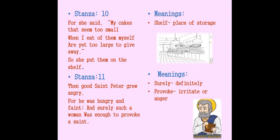Stanza 10: 'For she said, my cakes that seem too small when I eat of them myself are yet too large to give away. So she put them on the shelf.' The woman reasoned that when she ate the cakes herself they felt very small, but if she had to give them to someone, they felt too big to give away. She put all the cakes on the shelf of her kitchen and did not give any cake to St. Peter.